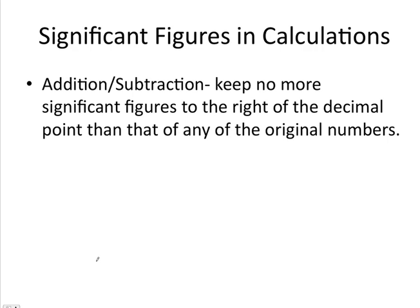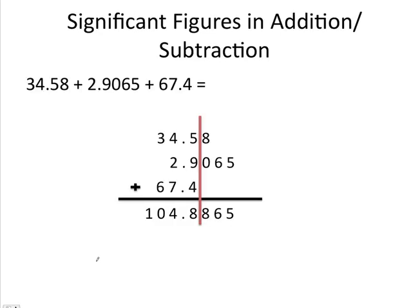What do I mean by that? Let's look at an example. If I'm adding 34.58 plus 2.9065 plus 67.4, it's easiest to line the numbers up with their decimal point and then draw a line after the number with the least number of decimal places. In this example, I drew it after the 67.4. We then know that we need to keep all of the numbers to the left of this red line, and we can't keep any more numbers to the right of the decimal point than that with the least. So because 67.4 has only one number to the right of the decimal point, we can have only one number to the right of the decimal point in our final answer.